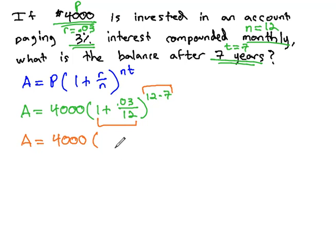So we have 4,000 times 1 plus .03 divided by 12. Again, use every decimal no matter how long and ugly it gets, .0025 to the 12 times 7 power, which is 84.